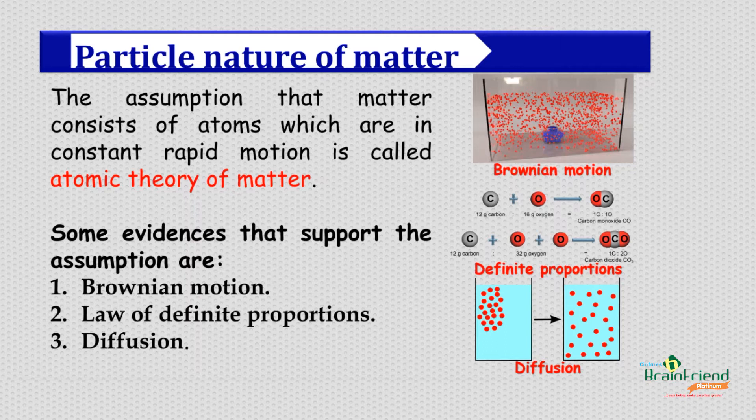The atomic theory of matter has it that atoms are in constant, rapid, random motion. This can be explained with three evidences: the Brownian motion, diffusion, and the law of definite proportion. We are going to see what these evidences are as we go further in this lesson.